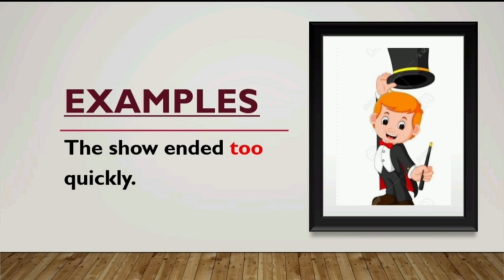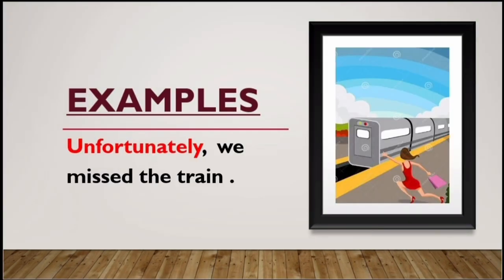The second example is: 'The show ended too quickly.' Here, 'too' is describing another adverb, 'quickly.' As we learned, an adverb can modify a verb, an adjective, another adverb, or the sentence altogether. So both 'too' and 'quickly' are adverbs here.